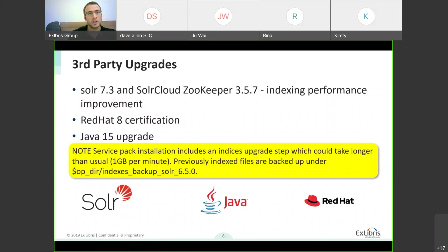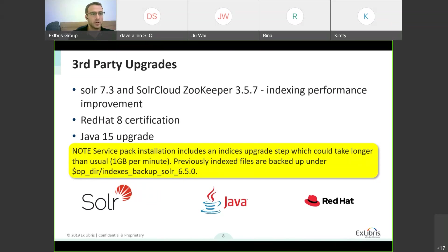For infrastructure, we're keeping all third-party upgrades to the latest. Solr has been upgraded to 7.3, and SolrCloud ZooKeeper upgraded to 3.5.7, which is the latest. We've seen quite significant improvements in indexing following this upgrade. We've run a Red Hat 8 certification and continue to upgrade Java since it's continuously reaching end of life. The service package delay could take a bit longer than usual because of the indices upgrade step — approximately one gigabyte per minute. Feel free to talk to Alex before you do the upgrade.